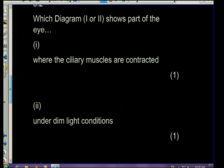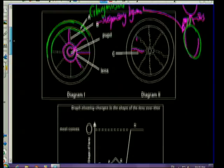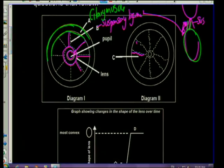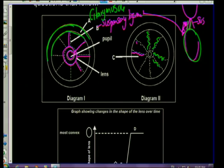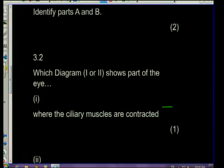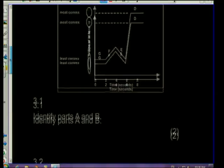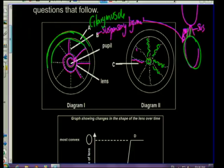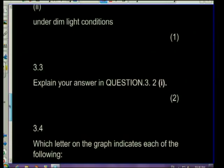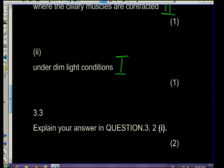Under dim light conditions, we look at the size of the pupil rather than the suspensory ligaments. In dim light, the pupil must get bigger to allow more light in. Looking at the diagrams, the tiny pupil is in one diagram and the larger pupil in the other - so diagram one shows the eye under dim light conditions.